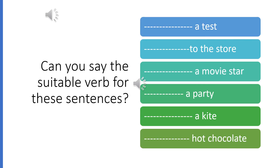Now, can you say the suitable verb for these sentences? إذا إنتبلكم الفعل من بداية الجمل اللي تعلمناهم في بداية الدرس، تقدر تحطي الأفعال لحالك. A test. To the store. A movie star. A party. A kite. A hot chocolate.